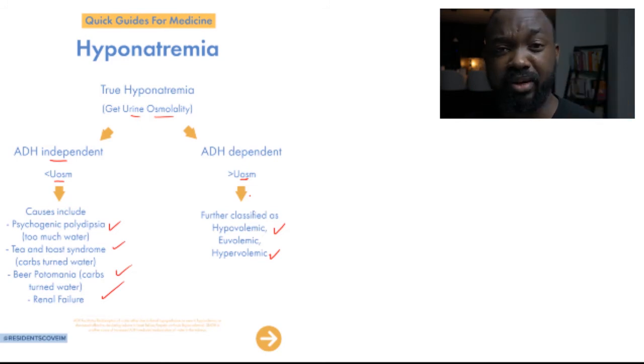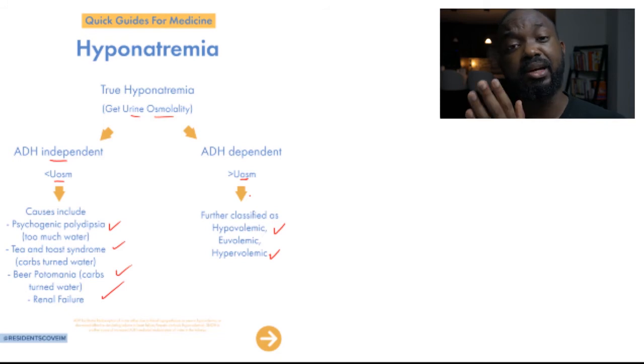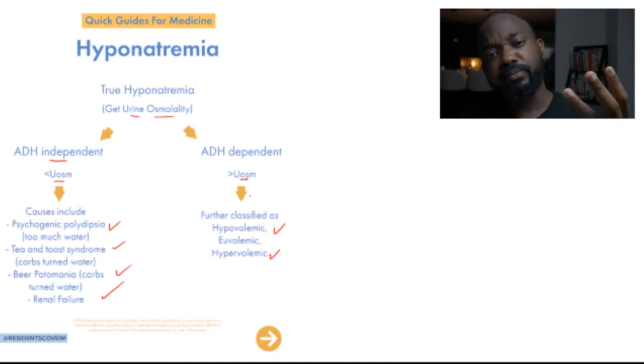Patient with beer potomania, they're drinking too much beer. When you break that down, basically it gives you carbs, and carbs, when you break that down further, you get a lot of water. Third thing is tea and toast syndrome. So for example, somebody who's surviving on purely carbs, when you break down the carbs, you get mostly water, and really that's what's going to dilute the serum and cause hyponatremia.